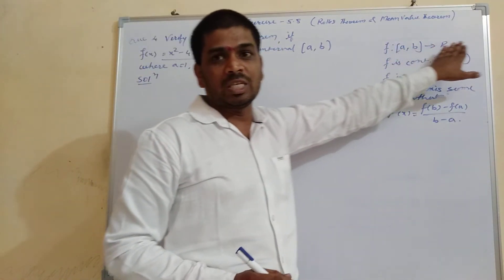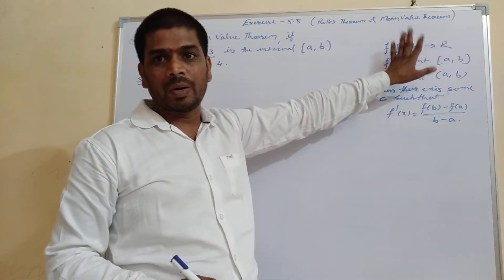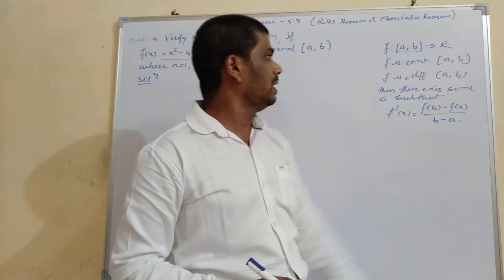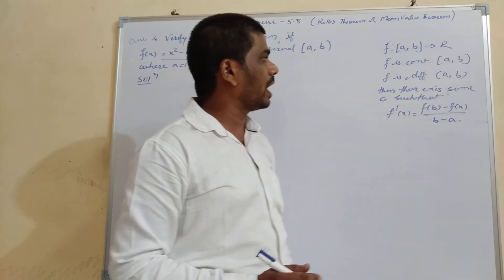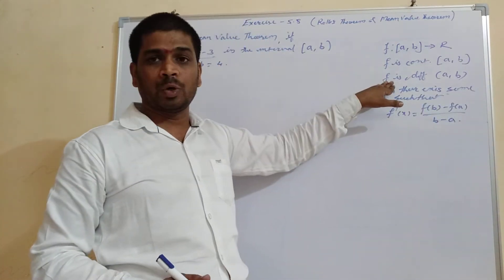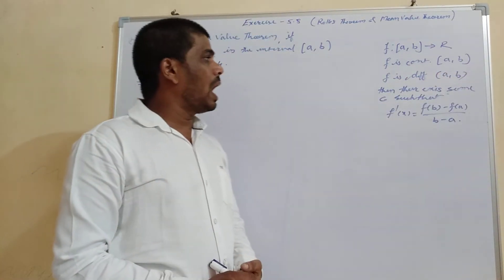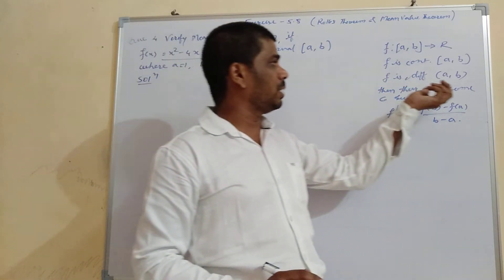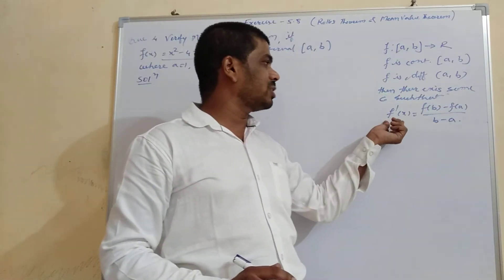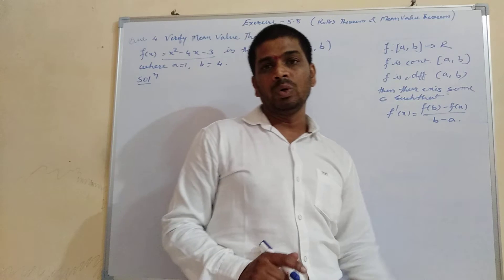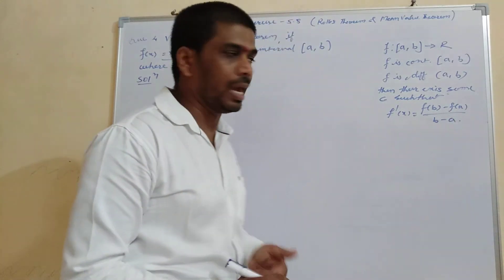This is the function in the closed interval a b. The mean value theorem states: f is continuous in the closed interval a b, f should be differentiable in the open interval a b, and then there must be a point c where f dash of c is equal to f of b minus f of a upon b minus a.